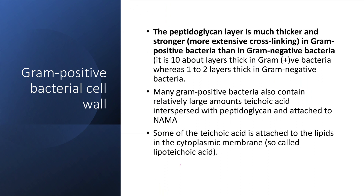First, let's talk about the cell wall of the gram positive bacteria. In gram positive bacteria, there is a peptidoglycan layer external to the cytoplasmic membrane, which is very thick — about 10 layers thick. The peptidoglycan layer is very strong in gram positive bacteria; it has 10 layers and these peptidoglycan chains are very highly cross-linked to each other, which makes the strength even greater.